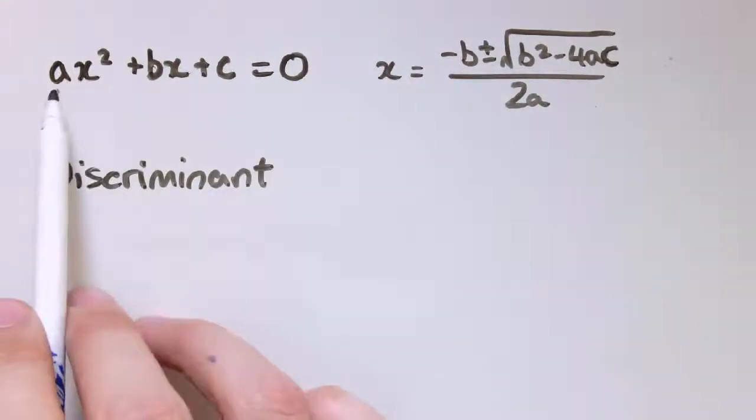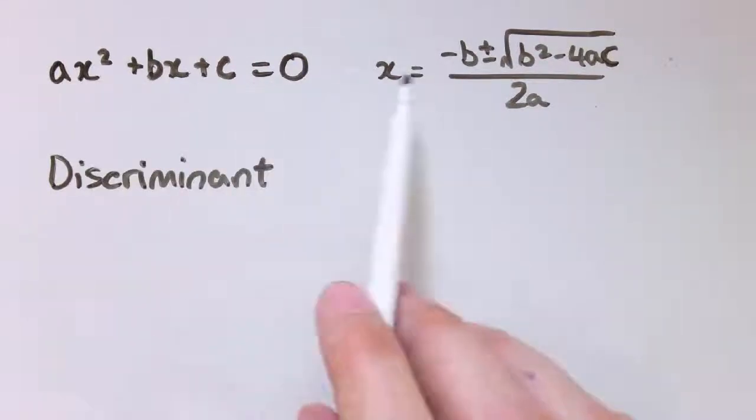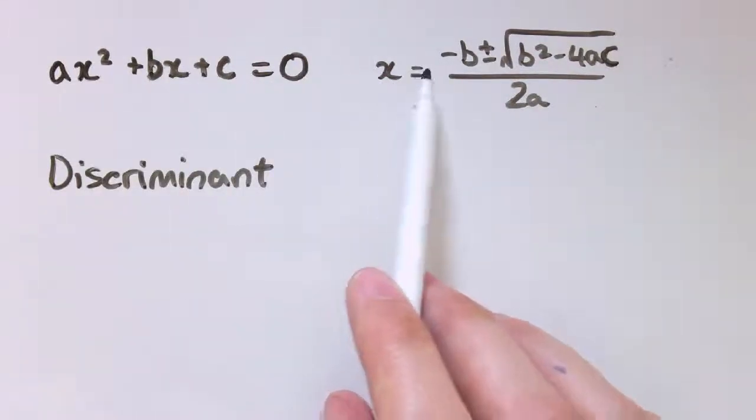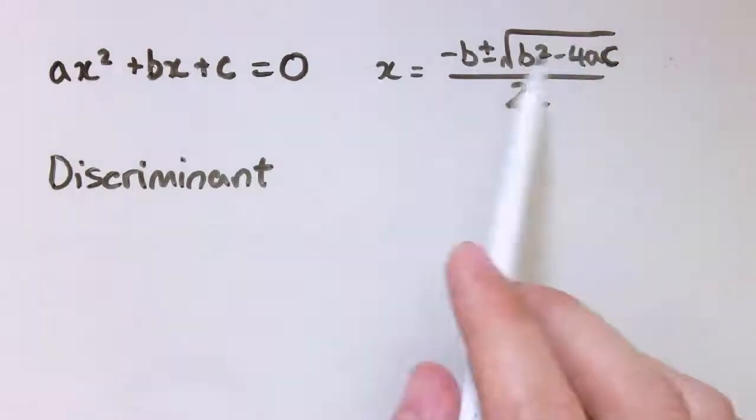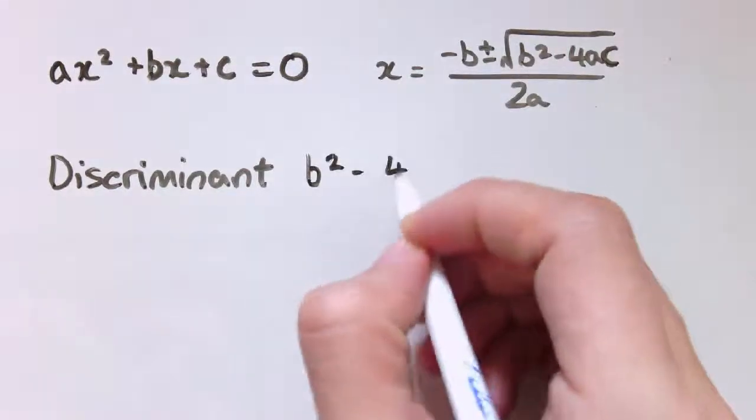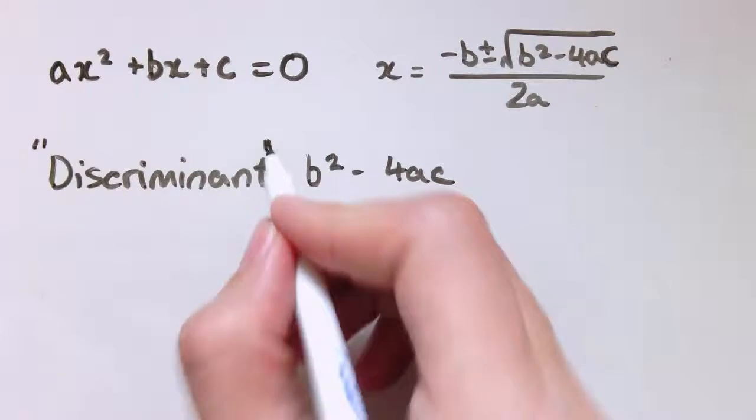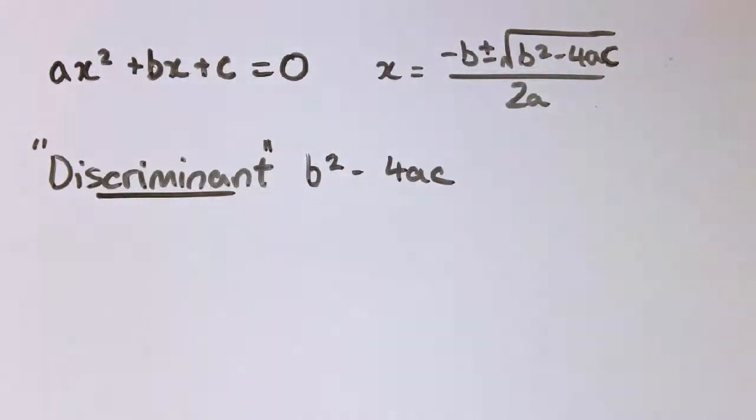So you know the quadratic formula that says if I've got a quadratic in the form ax squared plus bx plus c equals 0, then the solutions are given by minus b plus or minus the square root of b squared minus 4ac, divided by 2a. And this bit inside the square root, b squared minus 4ac, is the discriminant. And it's called that because it allows us to discriminate between the different cases of the quadratic.